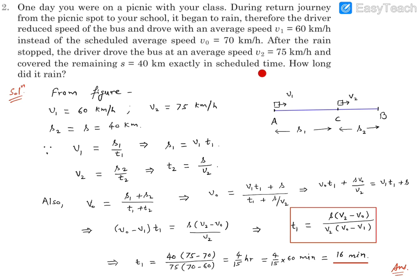covered the remaining s = 40 km exactly in the scheduled time. How long did it rain? So let's break down this problem. In this figure, let's say A is your picnic spot and B was your school where you are supposed to reach.